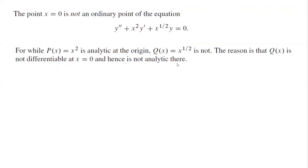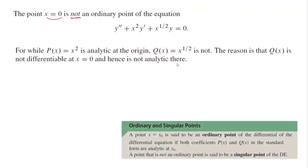The point x = 0 is not an ordinary point for y'' + x²y' + √x · y = 0, which is written in standard form. P(x) = x² is a polynomial and analytic everywhere. But q(x) = √x is not differentiable at x = 0, so it cannot be analytic at x = 0, making x = 0 a singular point.